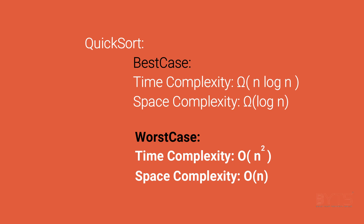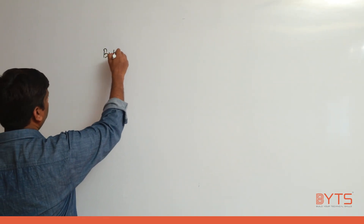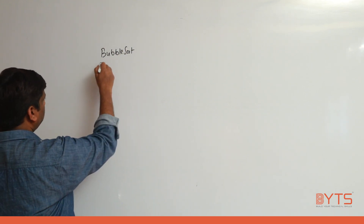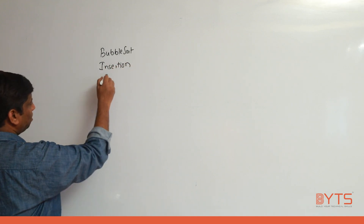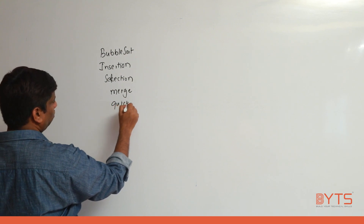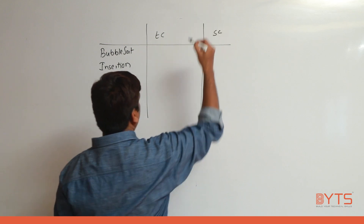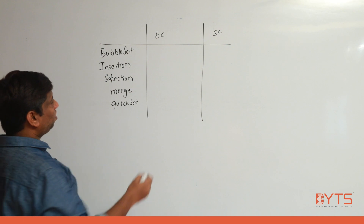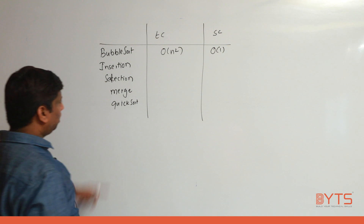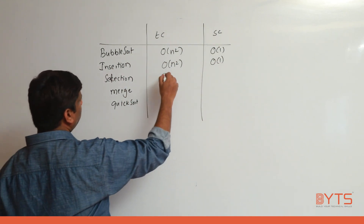Now let's see the summary of what we learned. Bubble sort: time complexity O(n²), space complexity O(1). Insertion sort: time complexity O(n²), space complexity O(1). Selection sort: time complexity O(n²), space complexity O(1).